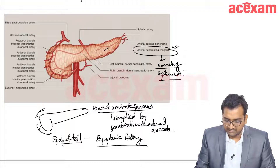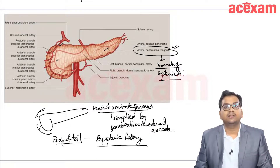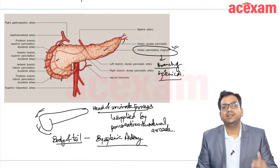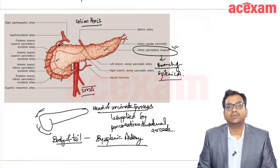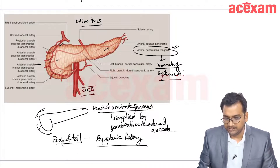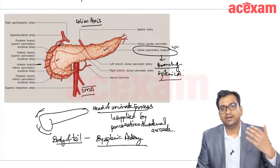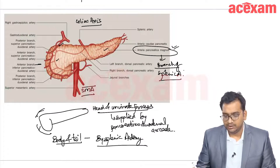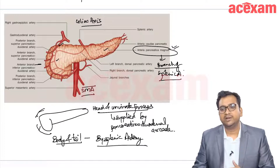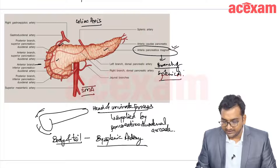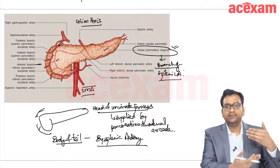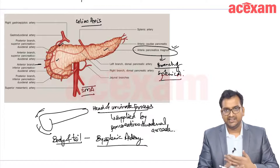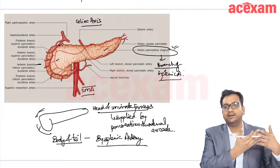For the head of pancreas, there is an anterior arcade and a posterior arcade, which are mainly communications between the celiac axis and SMA. Regarding foregut and midgut: proximal to D2 is foregut, supplied by branches of the celiac axis, and distal to D2 is midgut, supplied by branches from the SMA. There are four named arteries: anterior superior, posterior superior, anterior inferior, and posterior inferior pancreaticoduodenal arteries.